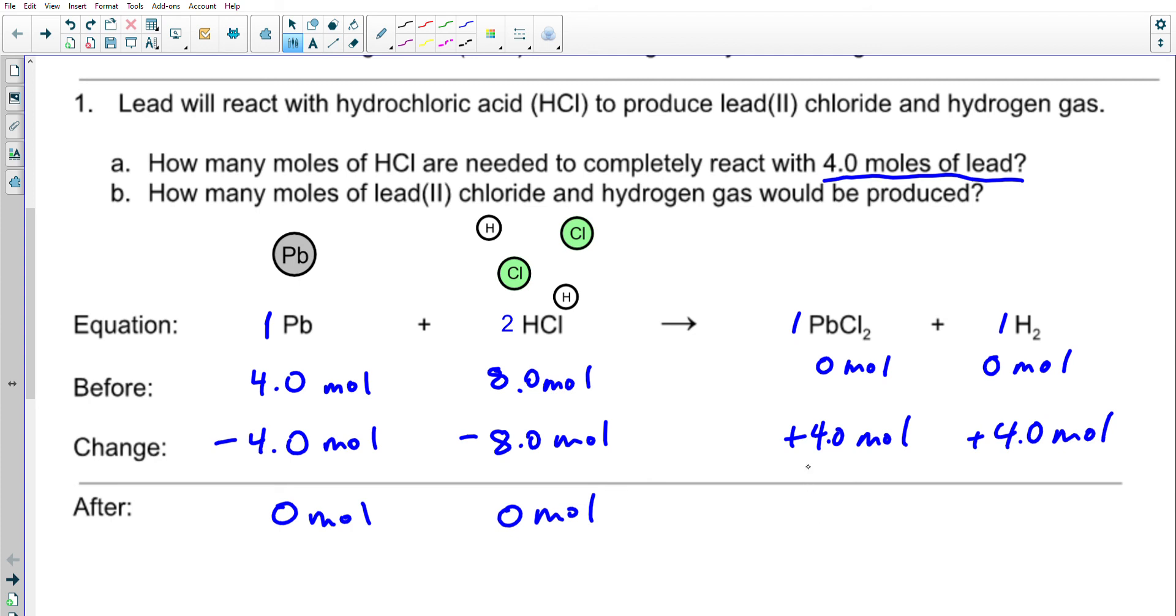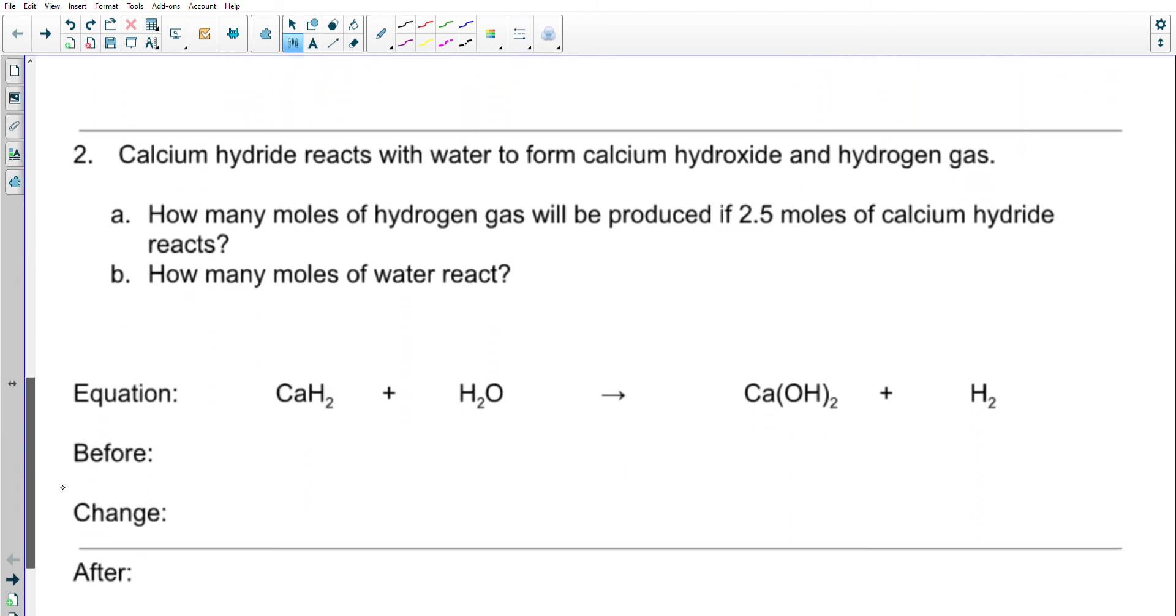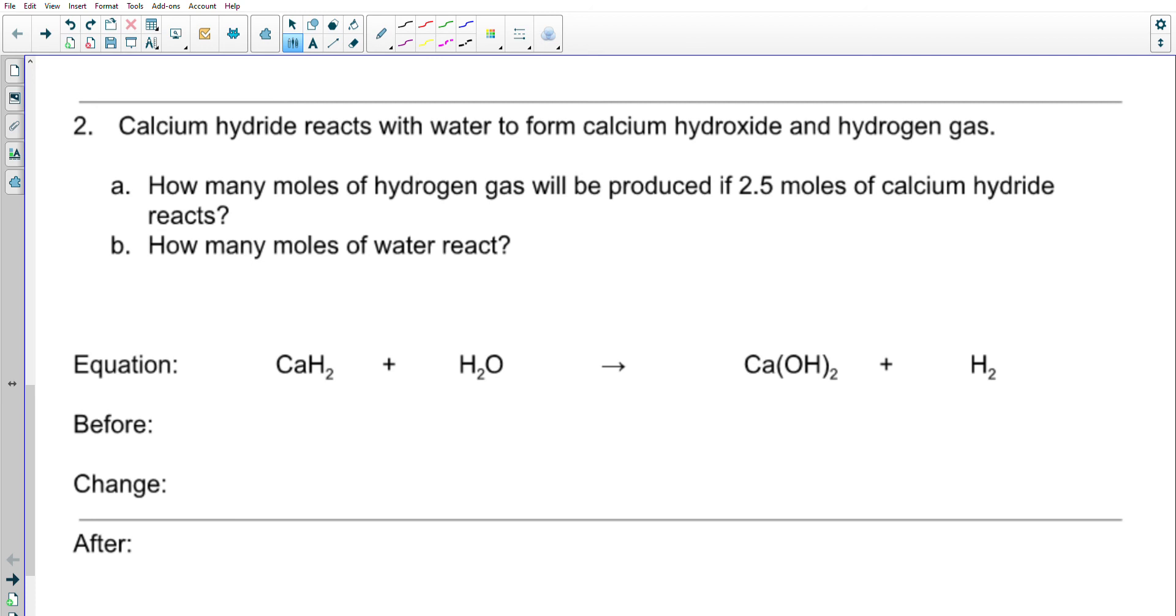In this problem, the numbers are kind of nice round numbers. You don't need to do a whole lot of calculating to figure this out, and the table will become more important when we get into more complex problems. I would encourage you as a follow-up to try number two, where we have calcium hydride reacting with water to form calcium hydroxide and hydrogen gas. I'm going to stop the video. Please try it and come back to check if your answer is correct.